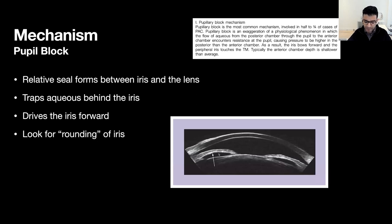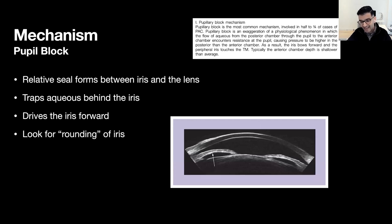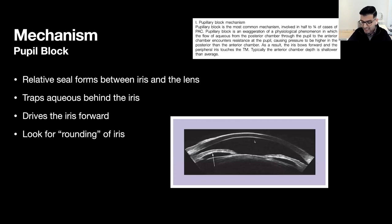When assessing for pupil block, we look for rounding of the iris and specifically the connection between the central iris and the anterior lens capsule. While these patients may have peripheral shallowing secondary to that bowing of the iris, they may have a fairly deep or relatively deep central anterior chamber.